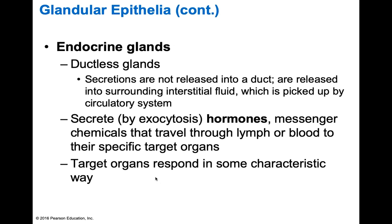Endocrine glands are typically ductless — secretions are not released into a duct but into surrounding interstitial fluid, which is picked up by the circulatory system. Endocrine glands secrete through exocytosis. They produce hormones, which are messenger chemicals that travel through the lymph or blood to their specific target organs to cause a characteristic response. Once hormones arrive at the target organ, there's a cascade effect of what occurs inside that organ.